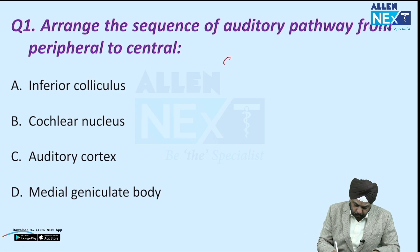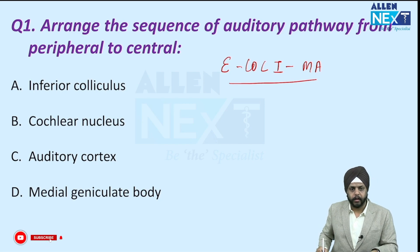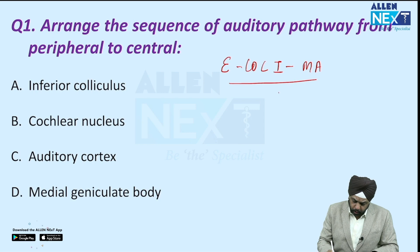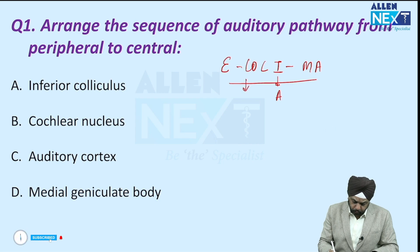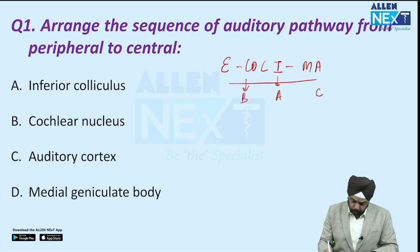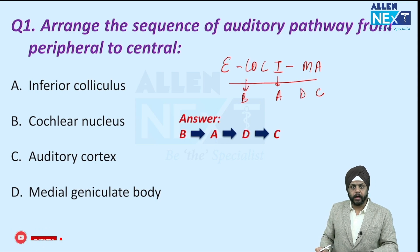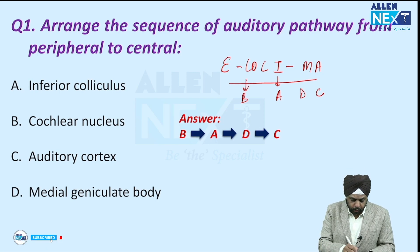We have been discussing the mnemonic over here multiple times: E. Coli. Ma. For the artery pathway, inferior colliculus can be placed here, cochlear nucleus was B, auditory cortex was C, and medial geniculate body was D. So the answer was B, A, D, C.